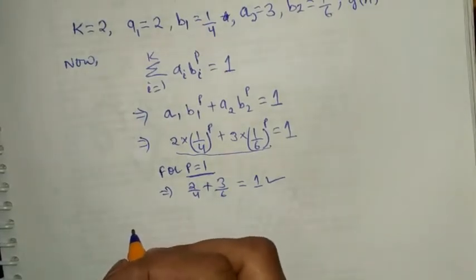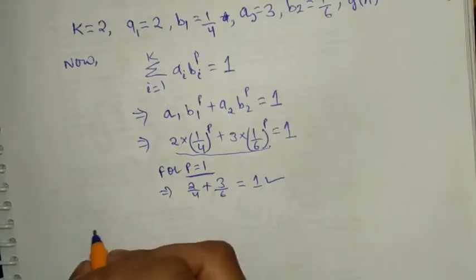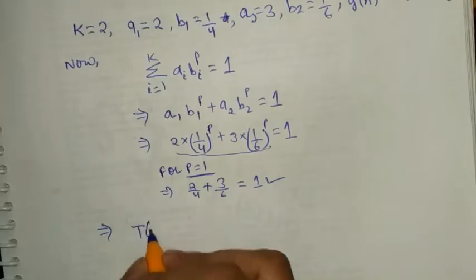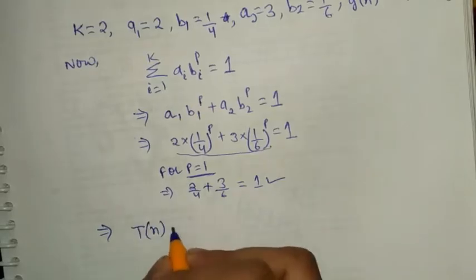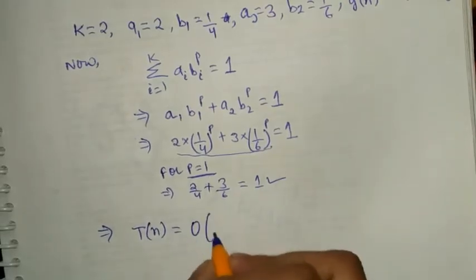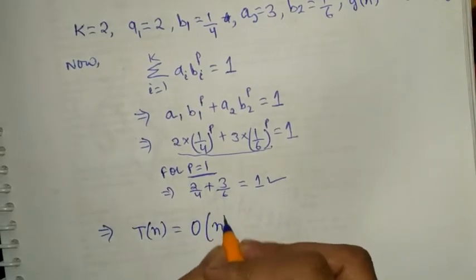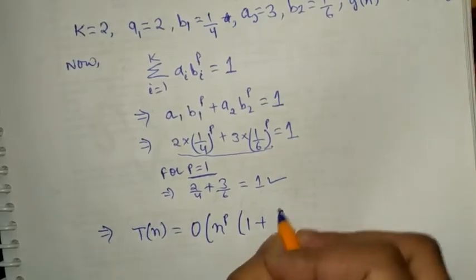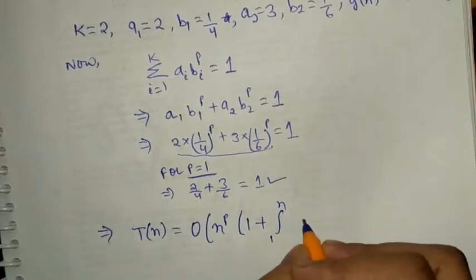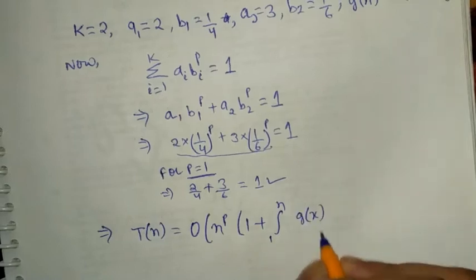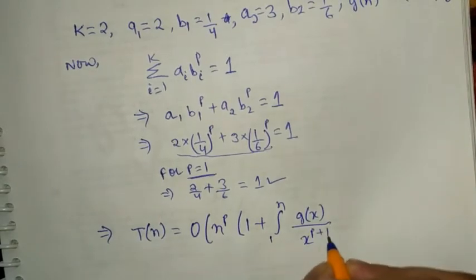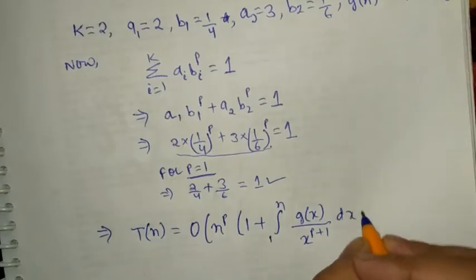The general Akra-Bazzi recurrence relation solution is: T(n) = Order of n^p times the quantity 1 plus the integral from 1 to n of g(x) divided by x^(p+1) dx.